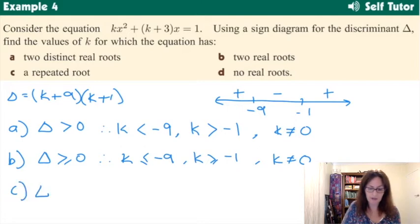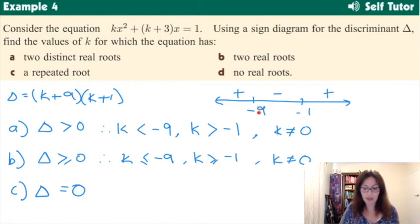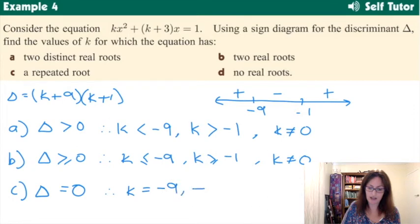Part C, a repeated root. Therefore, our discriminant is equal to 0. Hmm. When is our discriminant equal to 0 here? Well, on these critical values. Because if you were to substitute negative 9 into this discriminant here, the whole thing would equal 0. So therefore, when k is equal to negative 9 and negative 1 and part D,